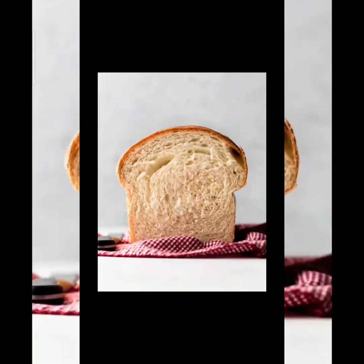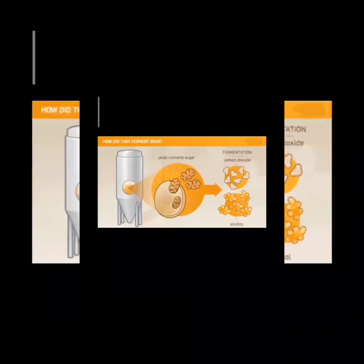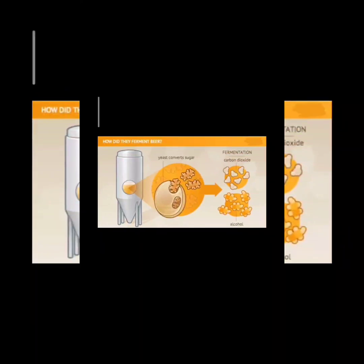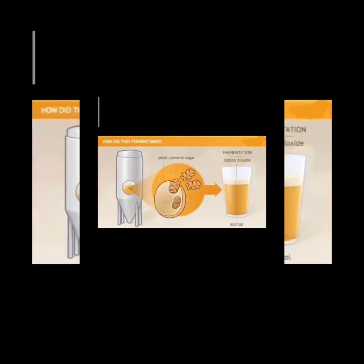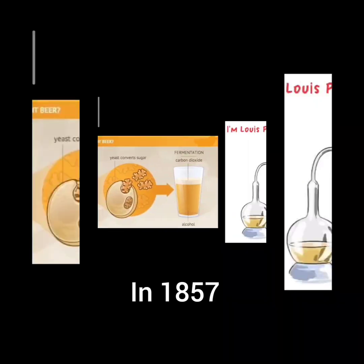Yeast is also commercially used for the large-scale production of alcohol and acetic acid, i.e. vinegar. Yeast is capable of converting sugar into alcohol and carbon dioxide. The process of conversion of sugar into alcohol by the action of yeast is called fermentation. Fermentation was discovered by Louis Pasteur in 1850.